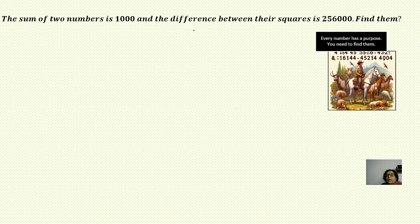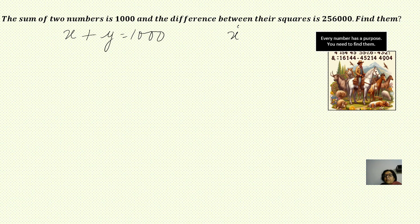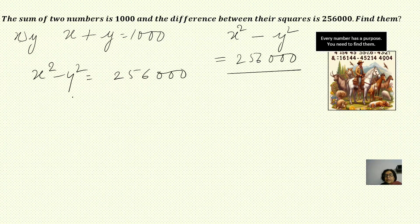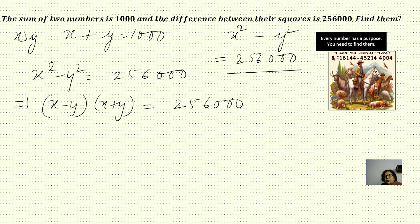Moving on: sum of two numbers is 1000 and the difference between the squares is 2,56,000. Find them. Again take the numbers as x and y, with x greater than y. First equation: x plus y equals 1000. Second equation: x squared minus y squared equals 2,56,000. We take the second equation and factorize using the a squared minus b squared formula as x minus y into x plus y equals 2,56,000.